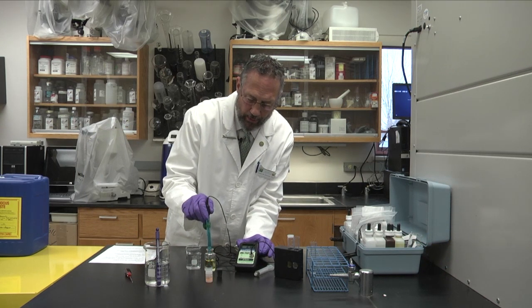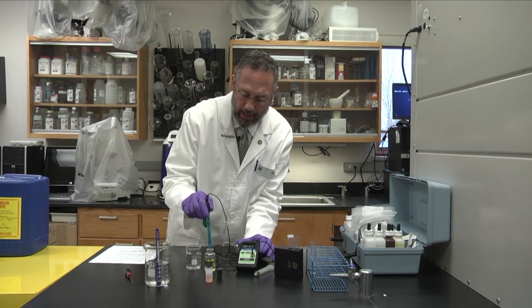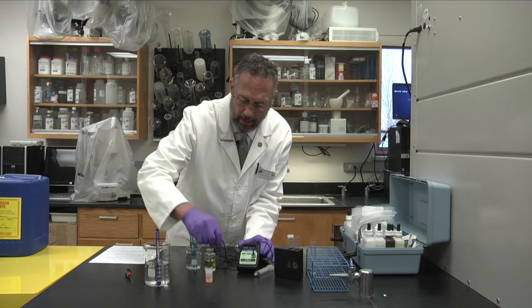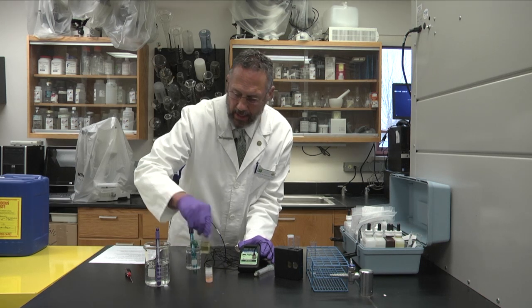At this point I will remove the probe from this calibrating solution pH seven calibrating and I'll rinse it off in this distilled water here. I'll plug this pH seven solution back up and set it aside.